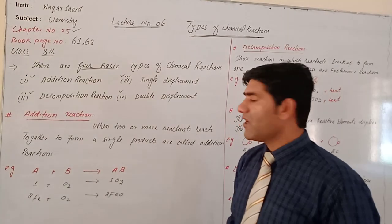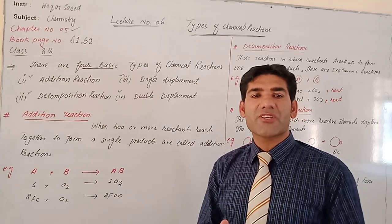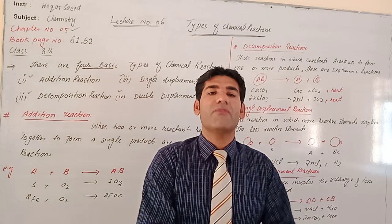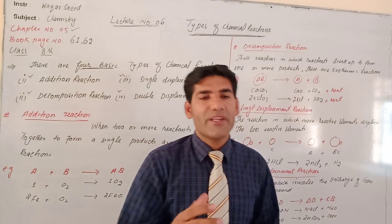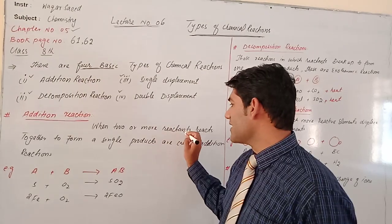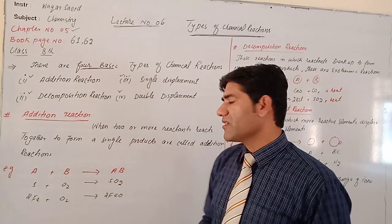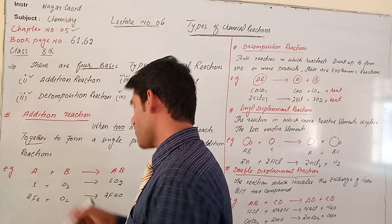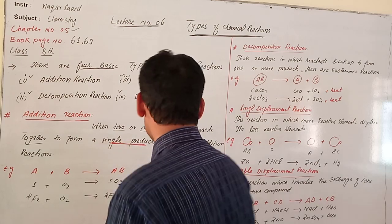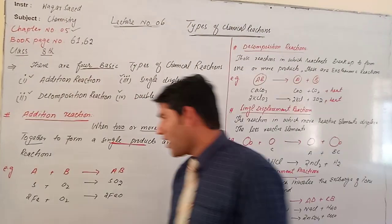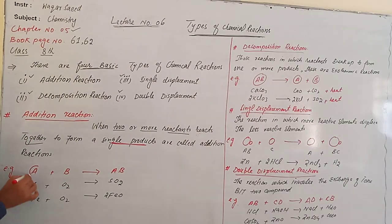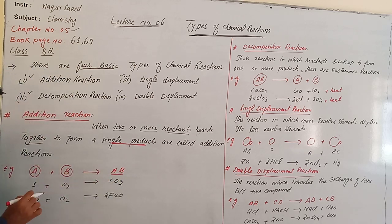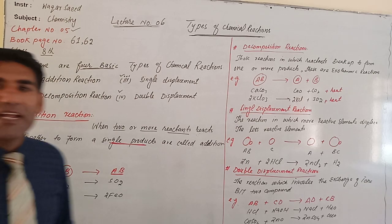First, what is addition reaction? The word addition comes from 'add,' which means to sum up. Addition reaction is when 2 or more reactants react together to form a single product, they are called addition reactions. For example, if we have reactants A and B, and these 2 reactants combine together, such reactions are called addition reactions.